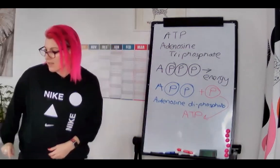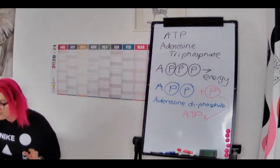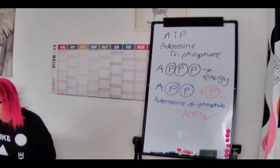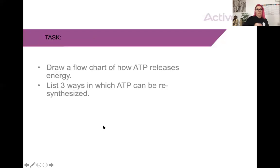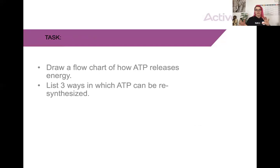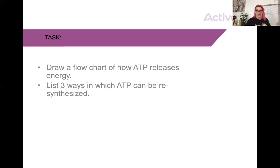I'm coming back to my laptop to give you a task. Your task is to draw a flowchart of how ATP releases energy: start with adenosine triphosphate, show how it releases energy, then adenosine diphosphate, and then what you need to do to recreate ATP — giving you a little flow diagram of the ATP cycle. Try to use the full technical terms rather than just the three-letter abbreviations so you start to learn the terminology.